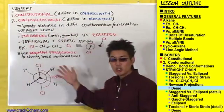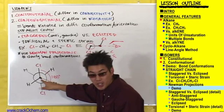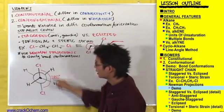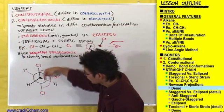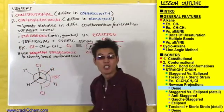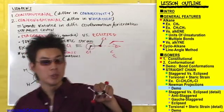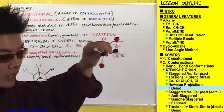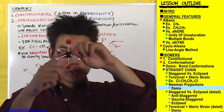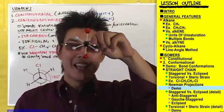And this is exactly what Newman projections are trying to portray. Here's the front carbon — the dot — with the chlorine pointing up, and a hydrogen going this way and this way. Here's the back carbon with the chlorine pointing down, and a hydrogen pointing this way and this way. Let me zoom in for you. Here's the front carbon, here's the back carbon. Here's the front carbon with the chlorine pointing up. Here's the back carbon with the chlorine pointing down.